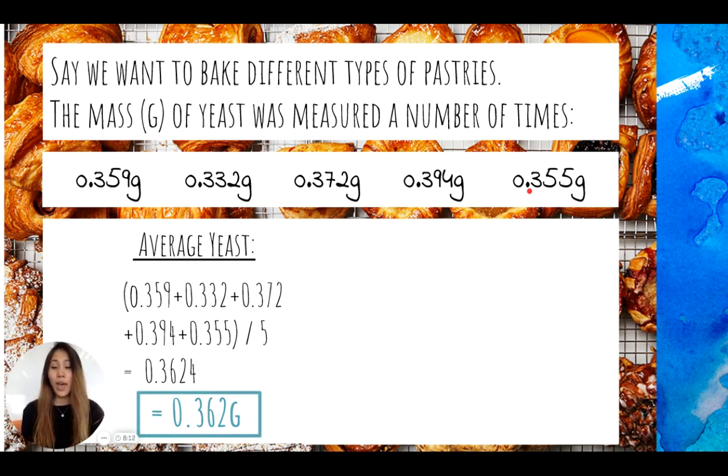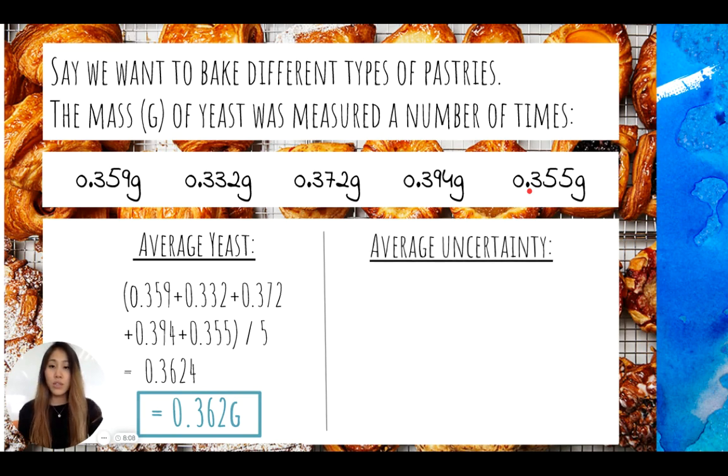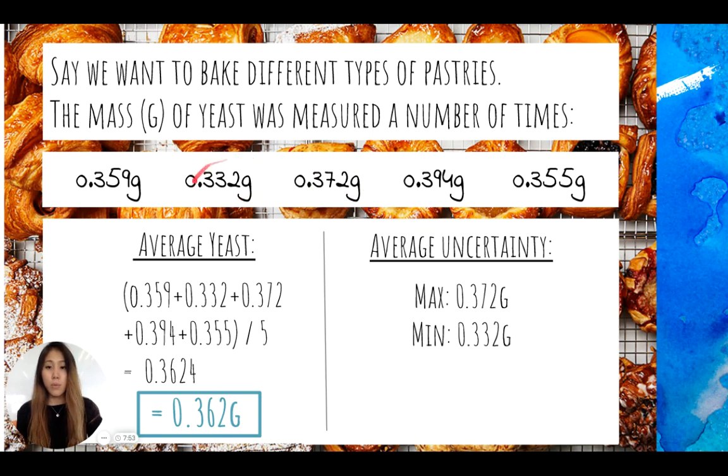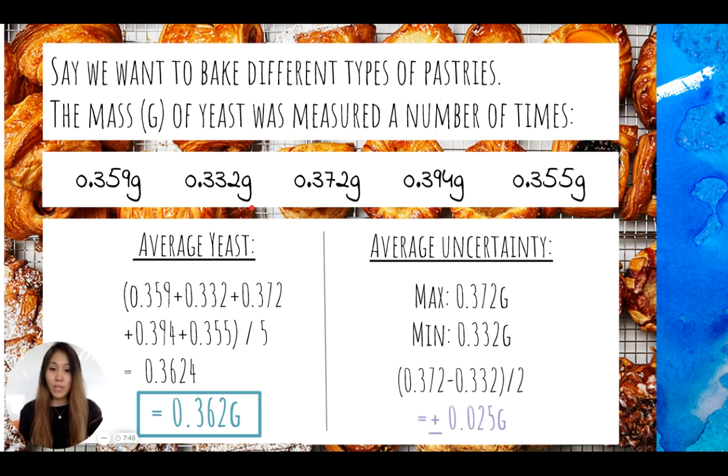Now let's take a look at how to calculate average uncertainty. Average uncertainty in this case is we take a look at the five different measurements that we've taken, figure out the maximum measurement, which in this case is 0.372 grams, figure out the minimum, which is 0.332 grams, and plug that into our formula of max minus min divided by two, and that gives us 0.025.